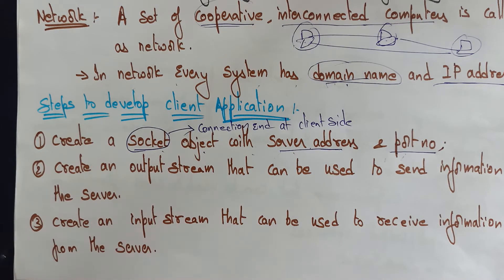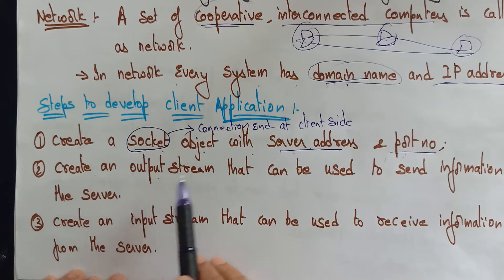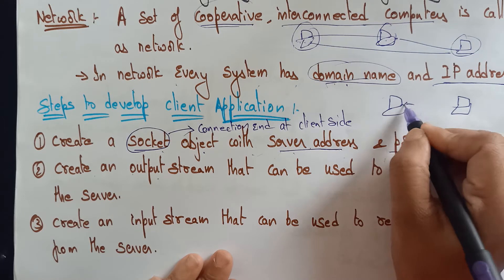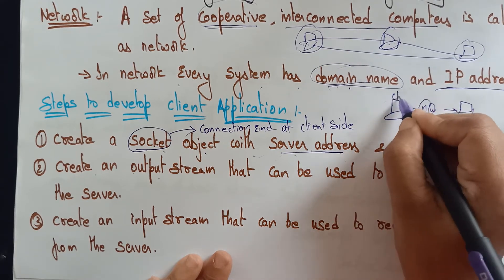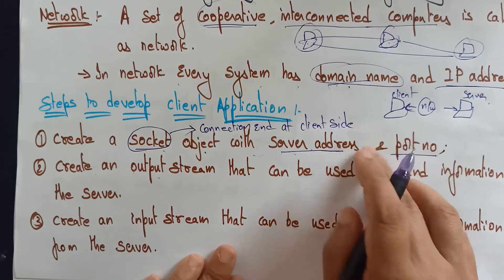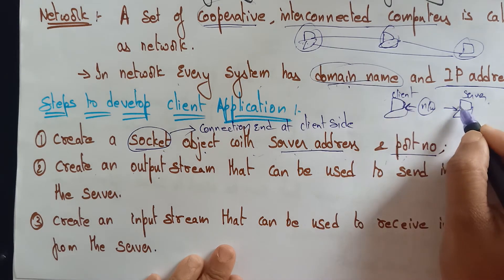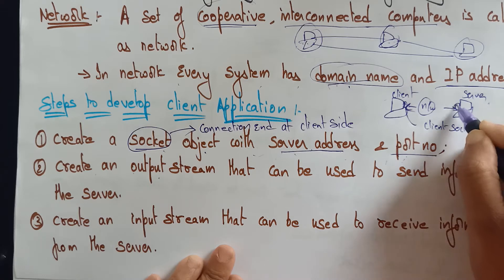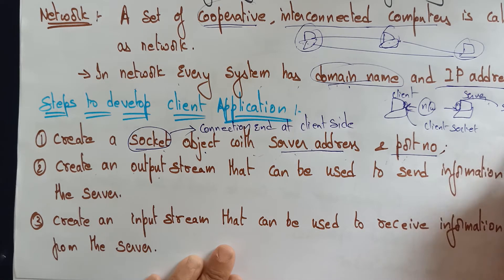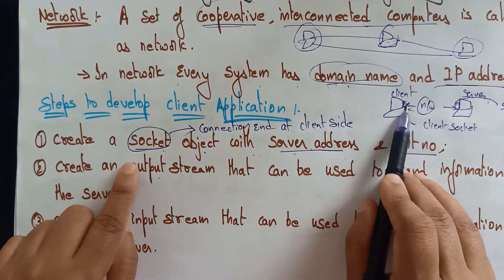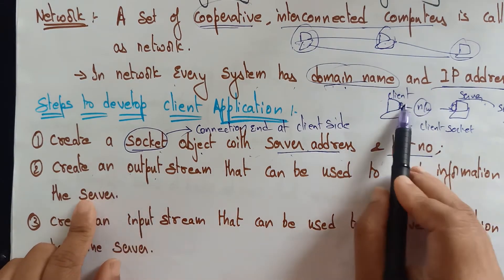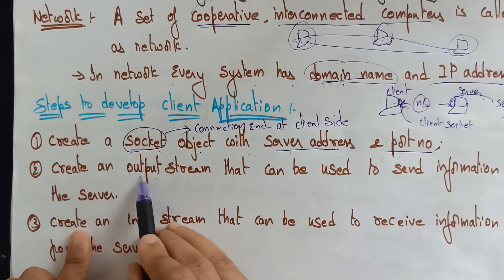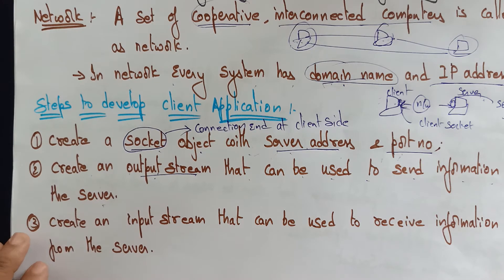Establish the connection using the socket object. The client socket connects to the server socket over the network. Next, create an output stream — this is used to send information to the server. The client is sending data, so that is output. So create an output stream that can be used to send information to the server.